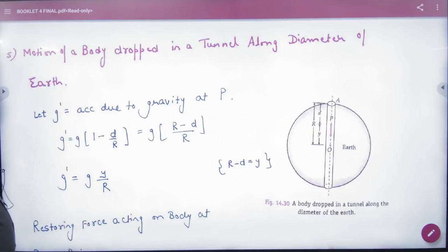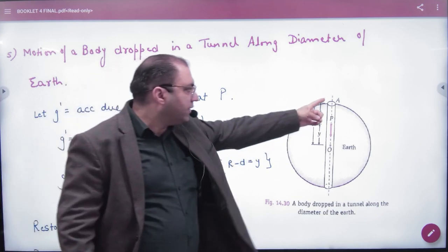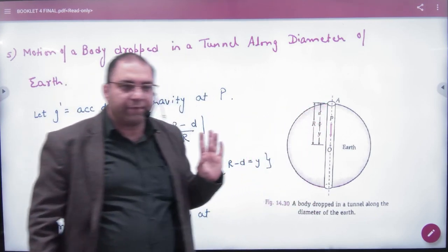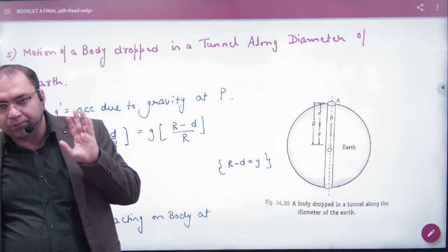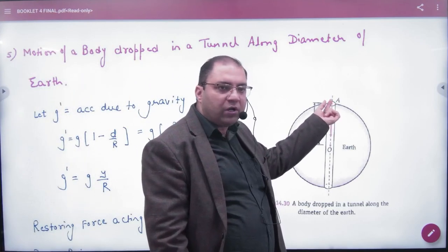Motion of a body dropped in a tunnel along the diameter of the earth. If I look at the earth in the middle of a tunnel, one point from the diameter crosses to go down. And I drop a ball. When I drop that ball, where will the ball go?